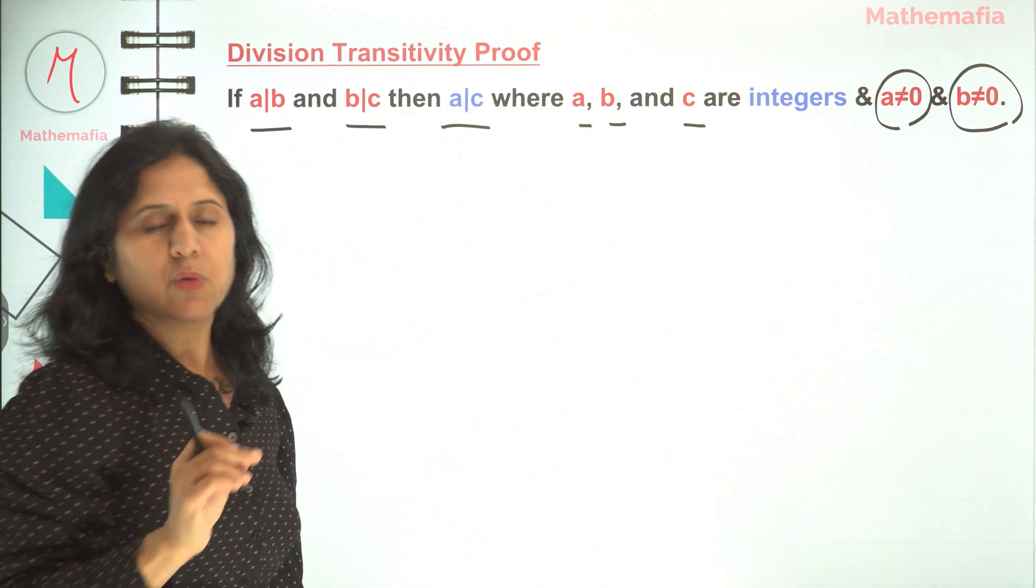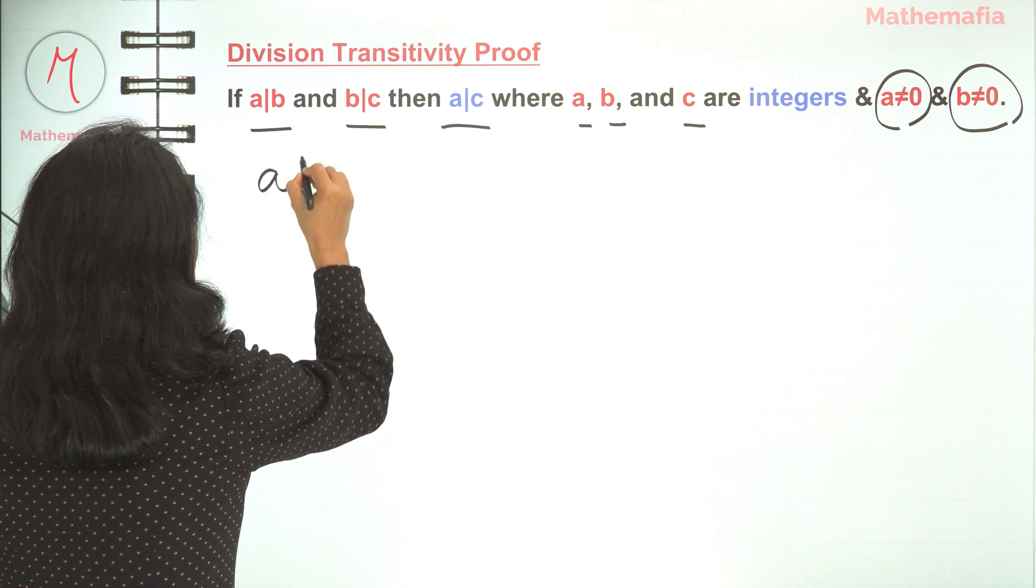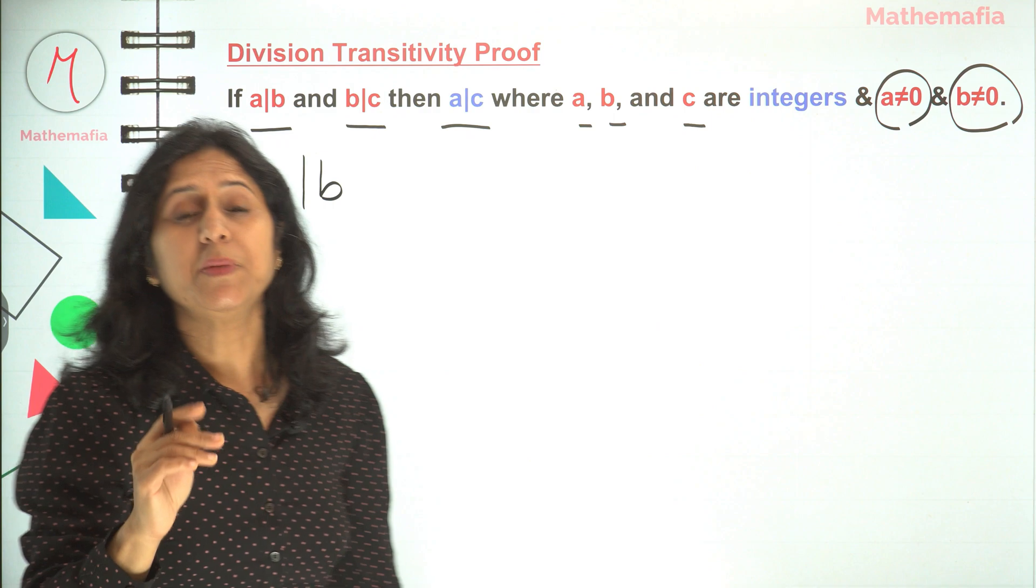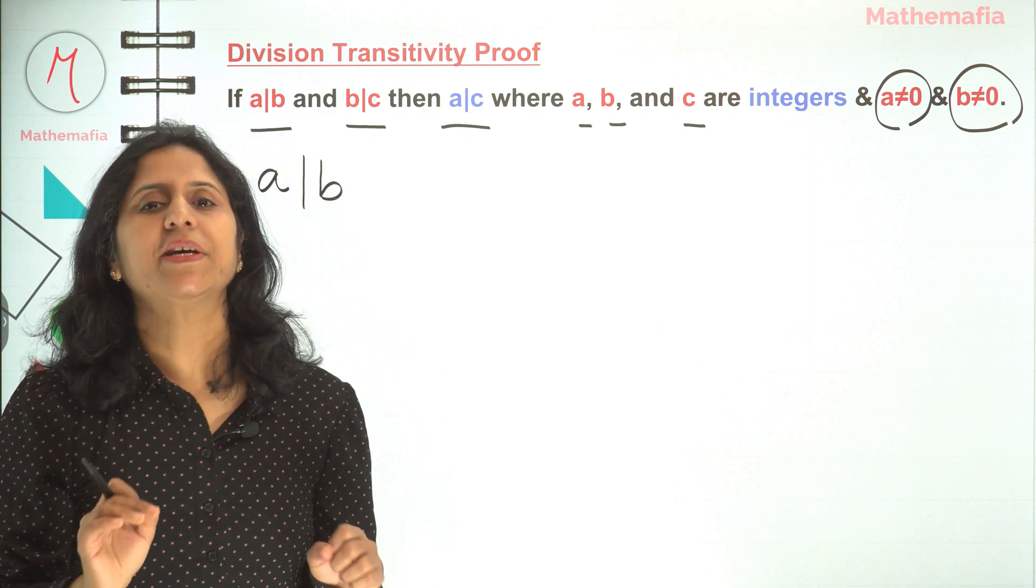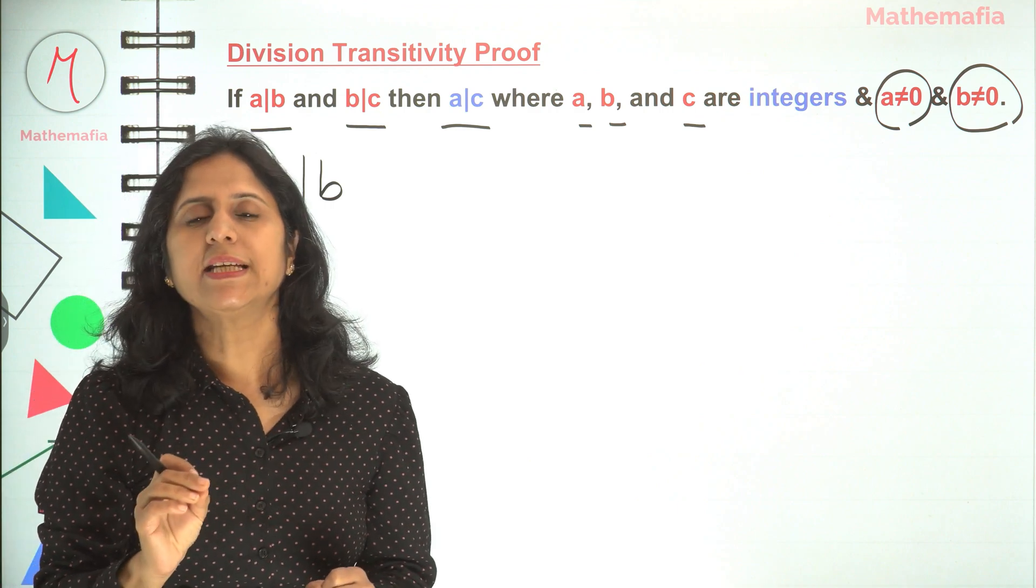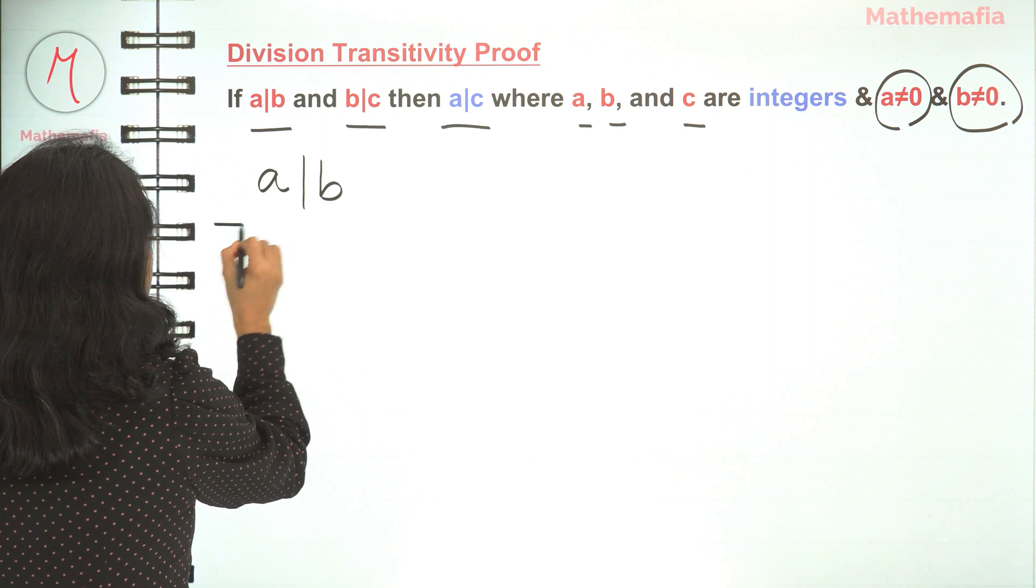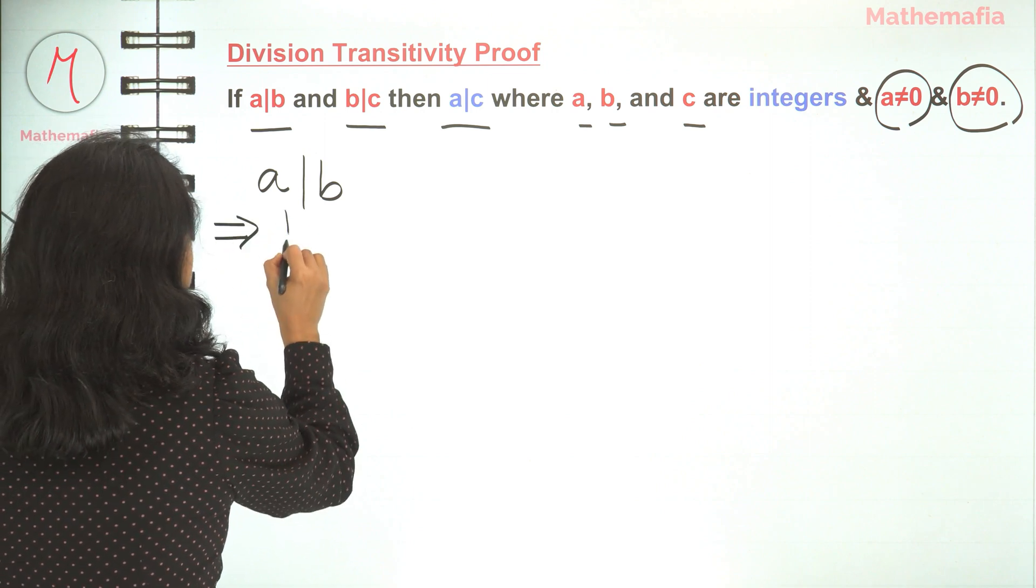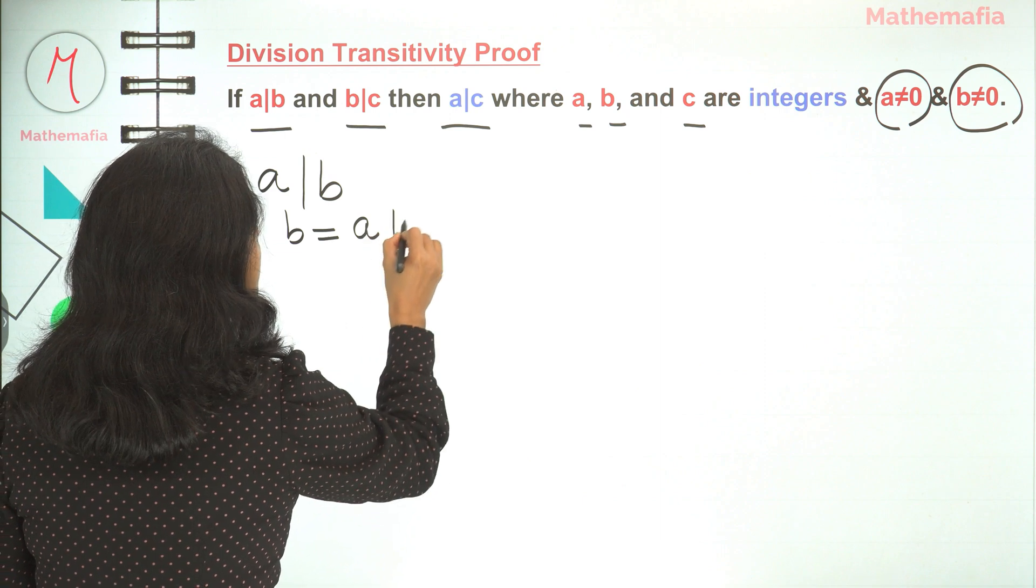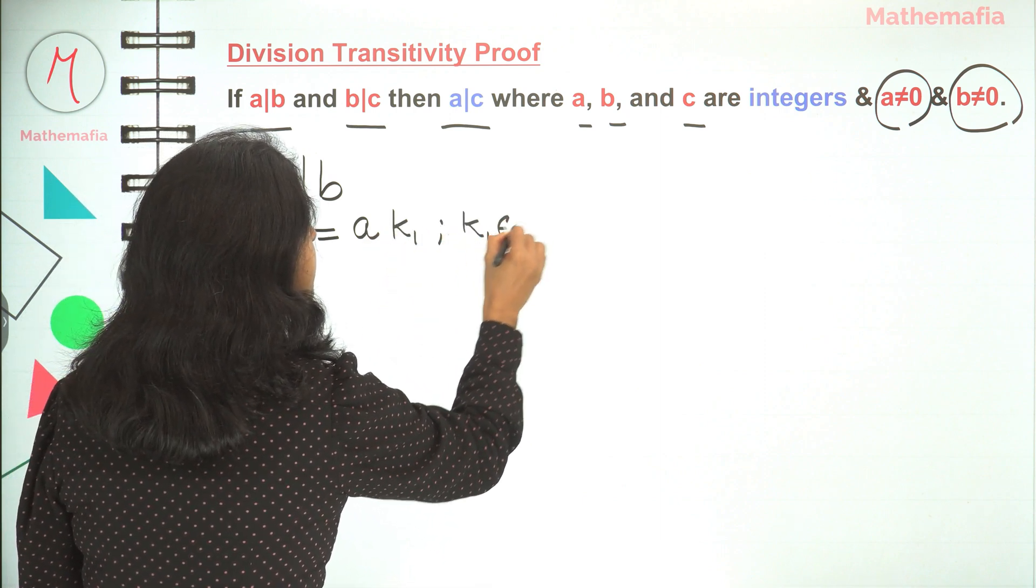So let's start with the proof. We are given that a divides b. What does this mean? This means that a completely divides b. This also means that a is a divisor of b, or we can say that b is a multiple of a. So this can be written as b equals a times some integer k1, where k1 is any integer.